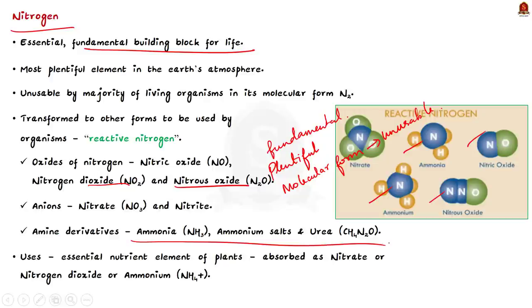Another important feature that is to be noted is that nitrogen is an essential nutrient element required by plants in greatest amount. It is absorbed by plants mainly as nitrate, that is as NO3. Some are also absorbed as nitrogen dioxide or ammonium, that is NH4+.